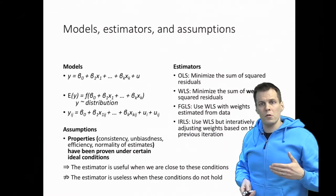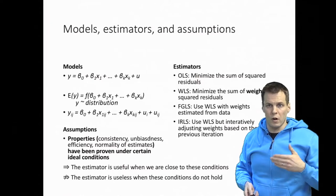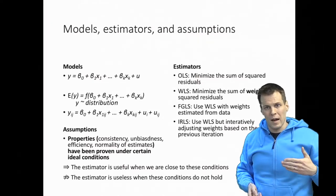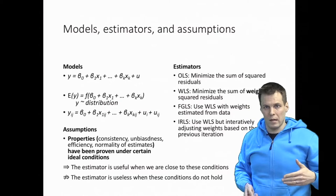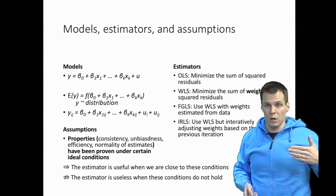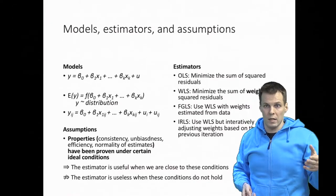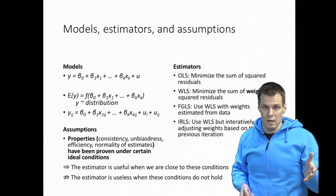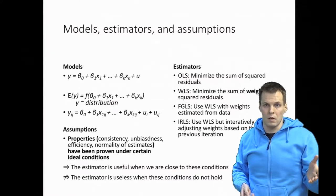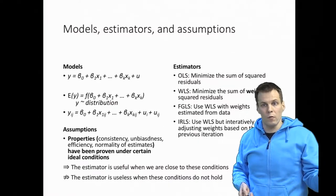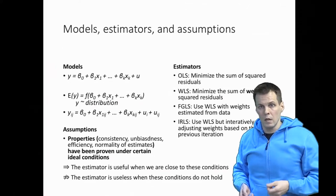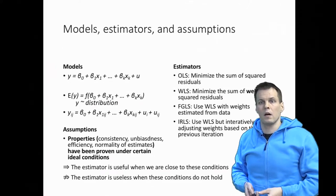The assumptions should ideally hold, but in practice they hold only approximately. Being in violation of, for example, the normality of the error term assumption in regression analysis doesn't necessarily have severe consequences — it just means that certain things can be proven. The thing we can't prove could still be true. With that understanding, let's take a look at the actual assumptions.